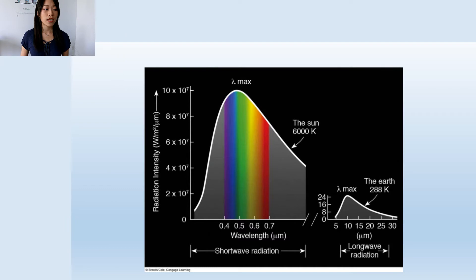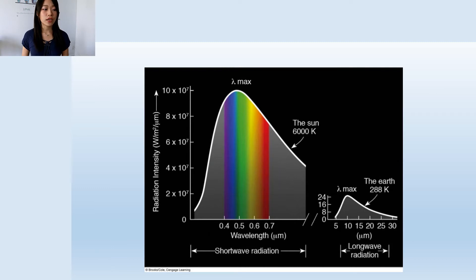As for the Earth, its surface temperature is around 288 Kelvin. Using the Planck's function, we get a curve on the right, with maximum radiation around 10 micrometers, which is a lot longer than the radiation emitted by the Sun. So we call the radiation emitted by the Sun the shortwave radiation, or solar radiation, and we call the radiation emitted by the Earth the longwave radiation, or terrestrial radiation.